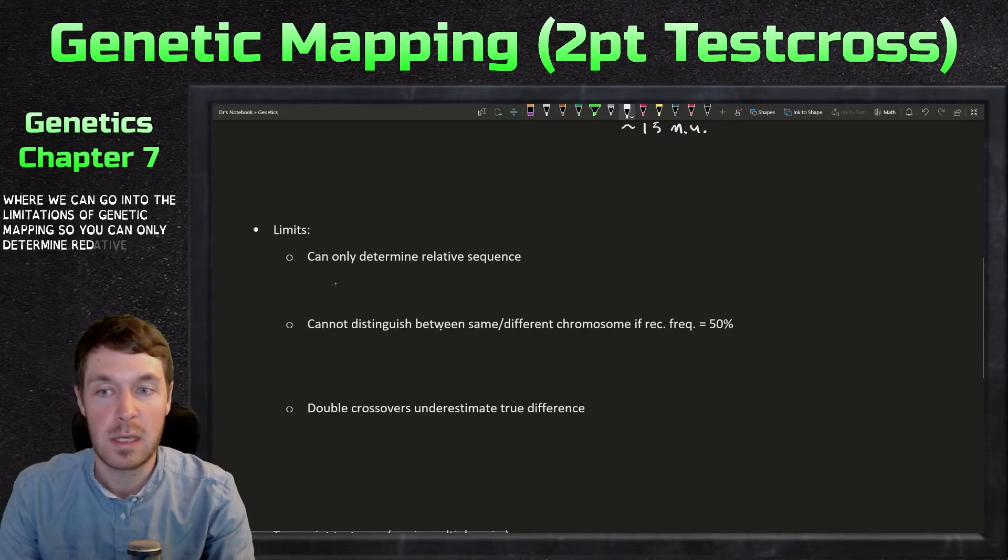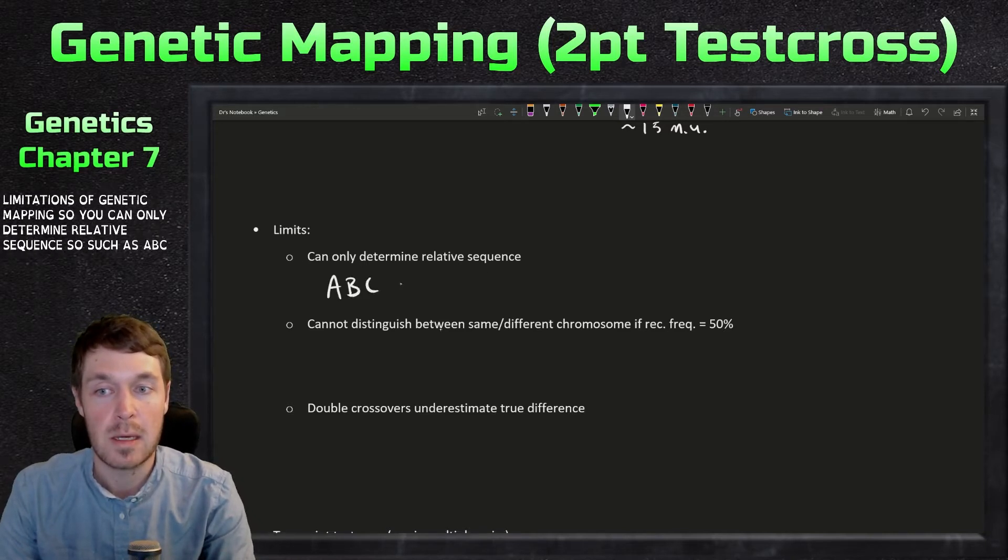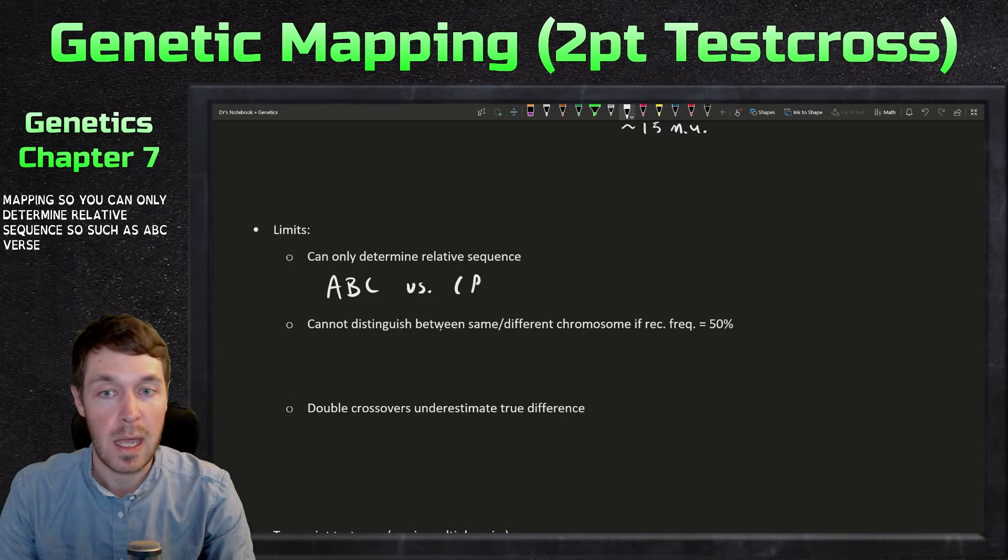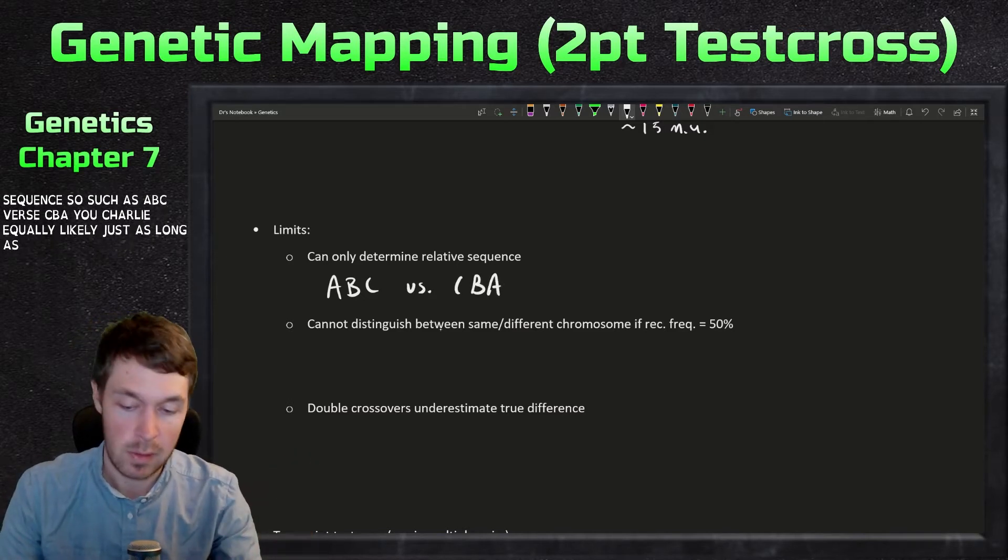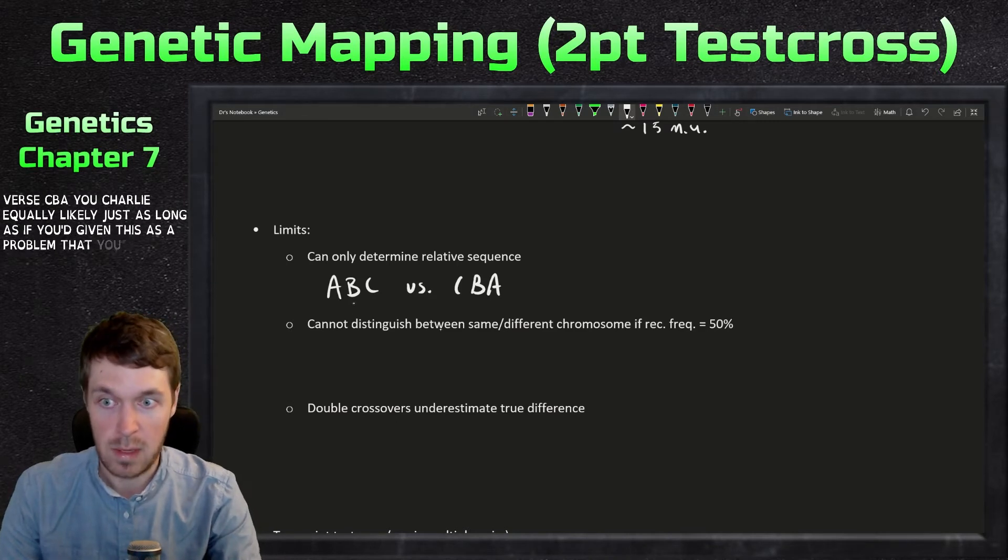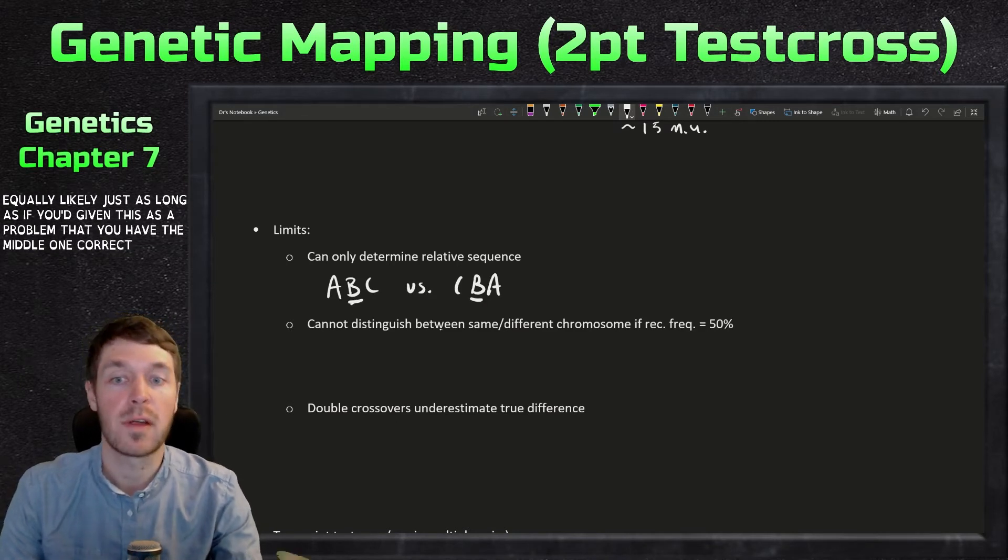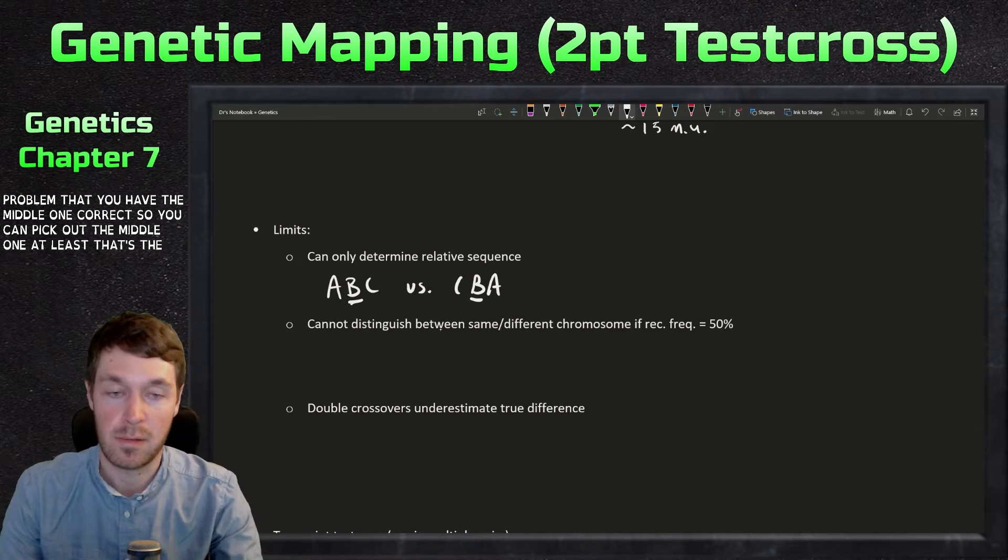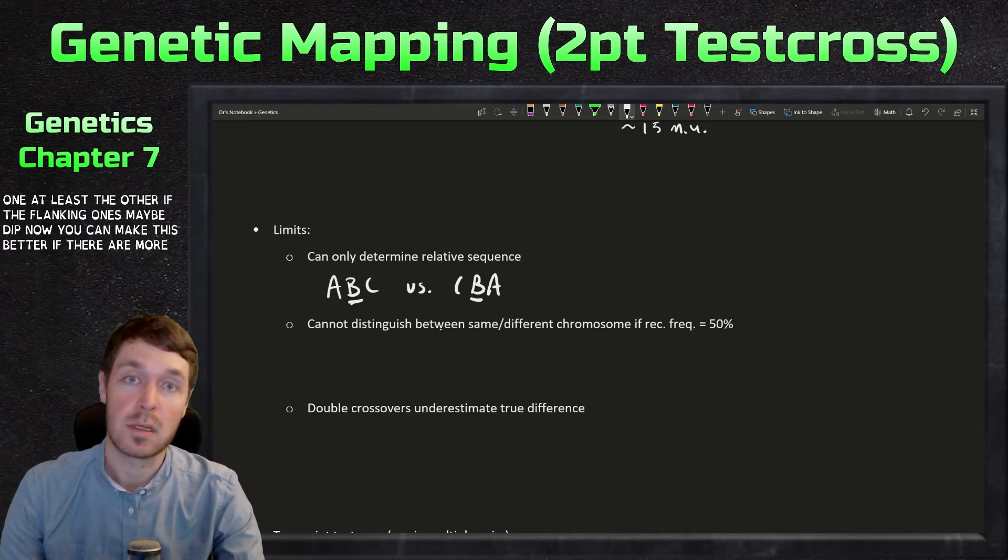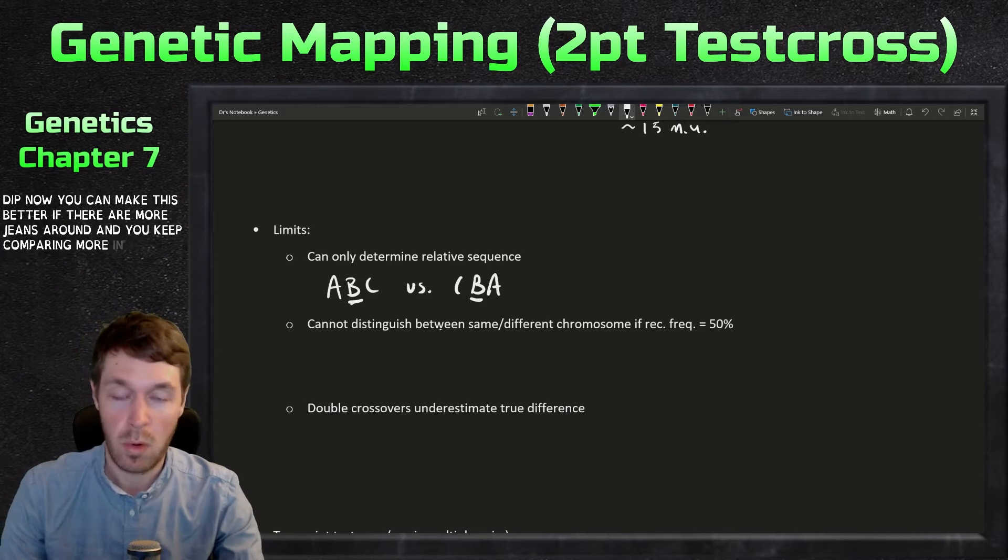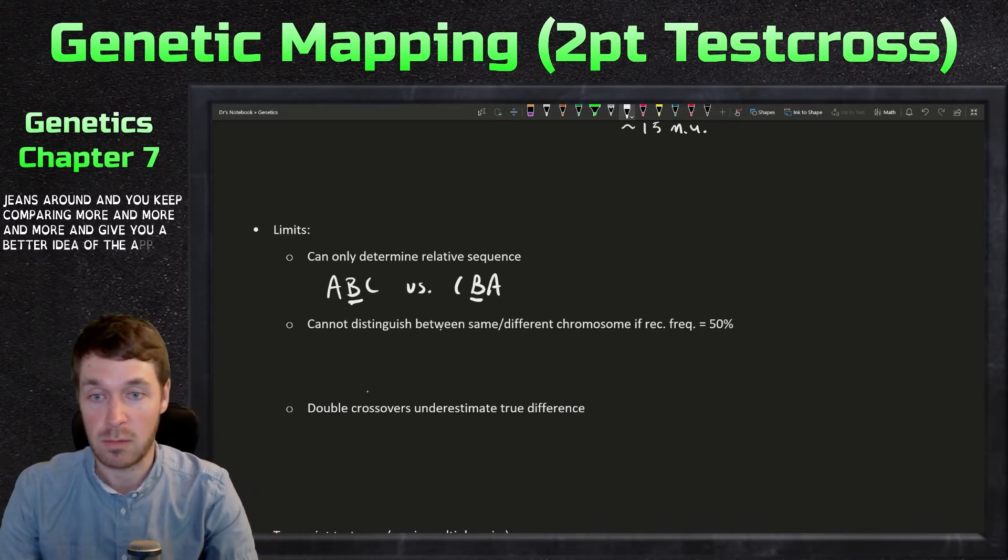You can only determine relative sequence. So such as A, B, C versus C, B, A. Each are equally likely, just as long as if you've given this as a problem, that you have the middle one correct. So you can figure out the middle one at least. Just the other, the flanking ones might be different. Now you can make this better if there are more genes around and you keep comparing more and more and give you a better idea of the actual relative sequence.